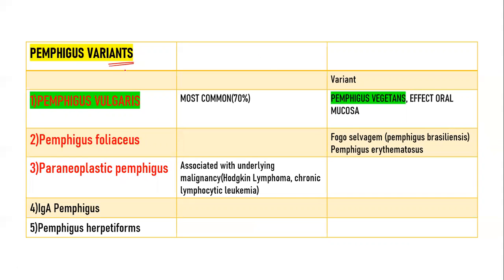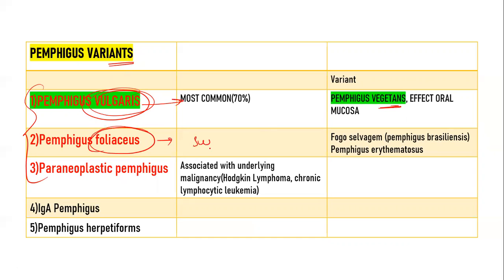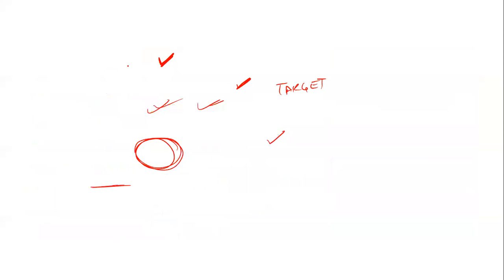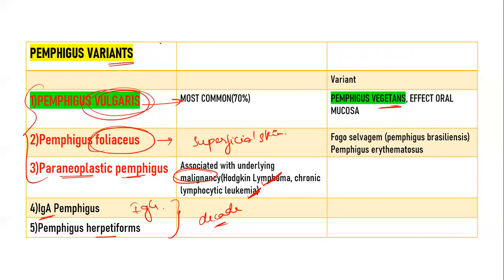Coming to the variants of pemphigus, there are three main variants. The first is pemphigus vulgaris, which is the most common variant, and it also includes pemphigus vegetans. The second most important variant is pemphigus foliaceus, which affects the superficial layers of the skin. The third variant is paraneoplastic pemphigus, which is always associated with an underlying malignancy — most commonly Hodgkin's lymphoma or chronic lymphocytic leukemia. In the recent decade, new forms such as IgA pemphigus and pemphigus herpetiformis have also been identified.